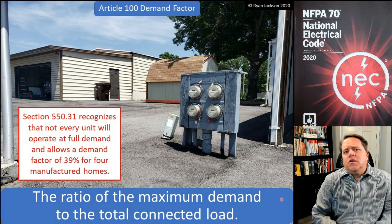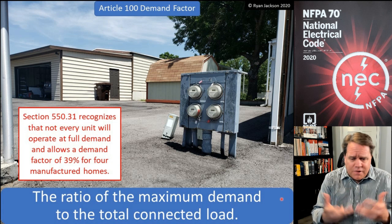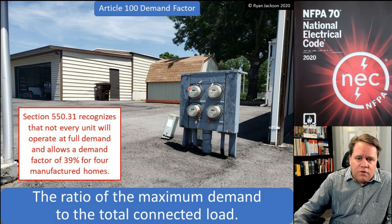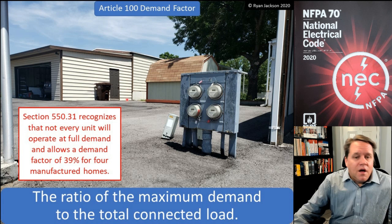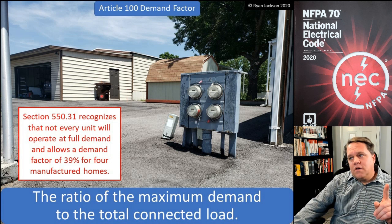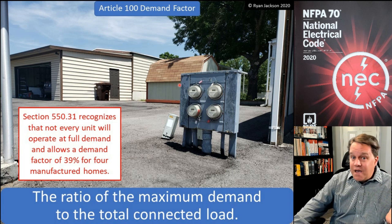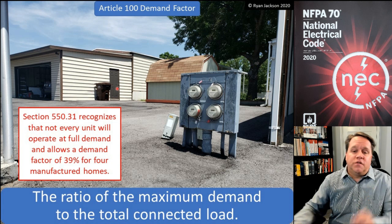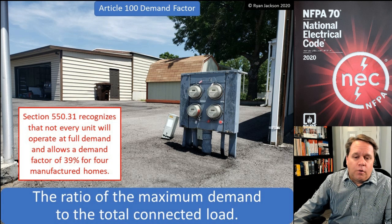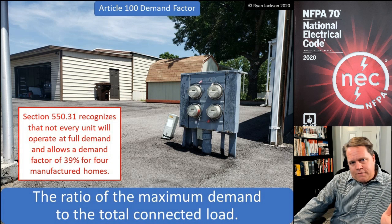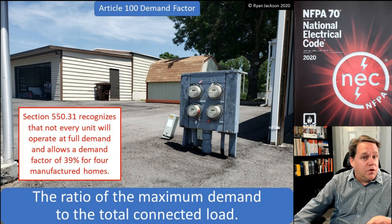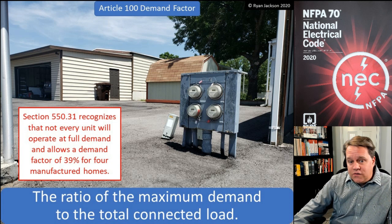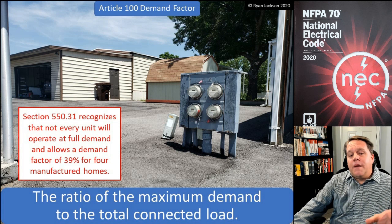You can use 310.12 to size it, but basically you have to assume we're going to be using everything in the house at the same time. We also recognize that maybe one of them is using everything all at the same time, but certainly not all four of these are — and that's where we have a demand factor. Section 550.31 recognizes that fact.